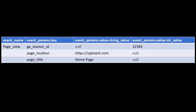Here's an example of how you'll see your data in GA4. You have the event name, which is a string. Then there is a record type that contains all your event parameters. For every event, you can pass lots of parameters, and all those parameters are listed in the event parameters key column. Keep in mind this is of type record — it contains a record of all the events.